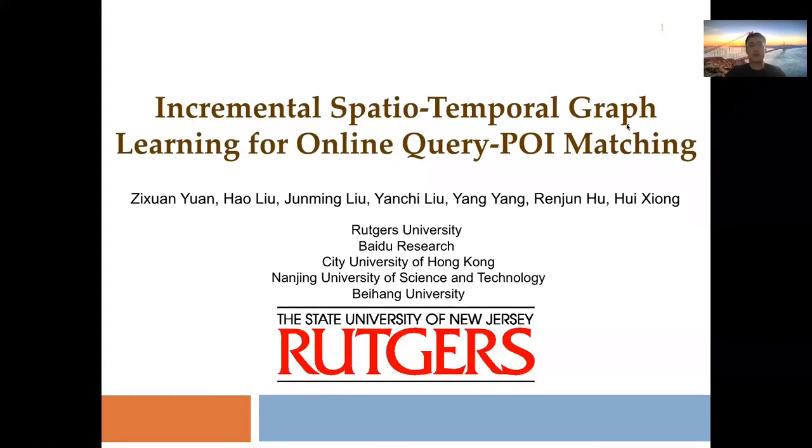Hello everyone, I'm Zixuan Yuan from Rutgers Data Mining Group. My advisor is Professor Hui Xiong from Rutgers University and other collaborators are Hao Liu from Baidu Research, Junming Liu from City University of Hong Kong, Yanchi Liu from Rutgers University, Yang Yang from Nanjing University of Science and Technology, and Renjun Hu from Beihang University. Today I'm going to talk about my intern project at Baidu Research last summer. The topic is Incremental Spatio-Temporal Graph Learning for Online Query-POI Matching.